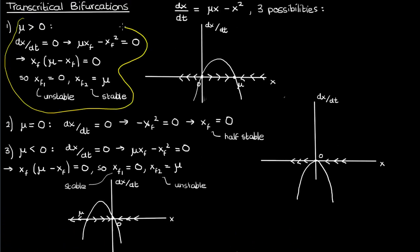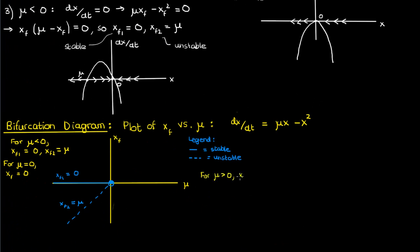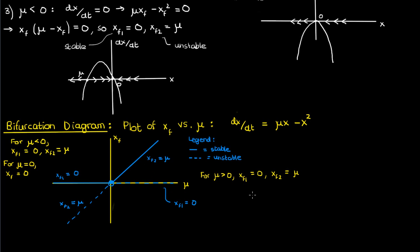And finally, what about when μ was positive? There were two fixed points: xf1 was always zero, while xf2 was always equal to μ for positive μ. However, the stabilities were now switched from the negative μ case — the fixed point at zero was now unstable, while the fixed point at μ was now stable. We can see from the bifurcation diagram that as we go from negative μ to zero to positive μ, the unstable and stable fixed points merge into a half-stable fixed point at μ equals zero, then split apart with opposite stabilities. In other words, there is an exchange of stability between the two fixed points.